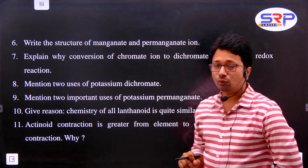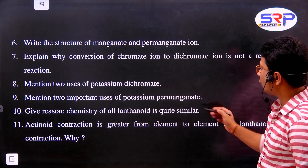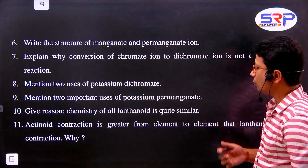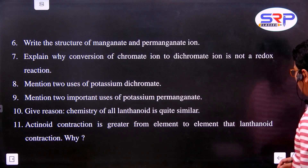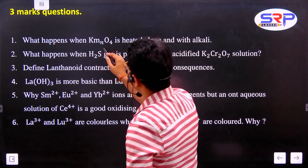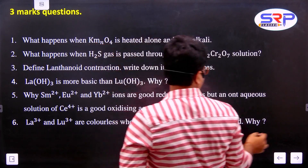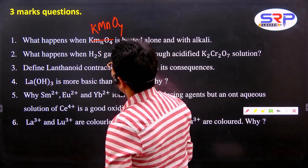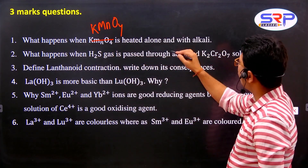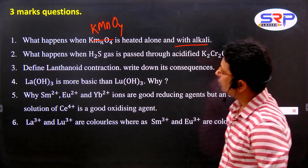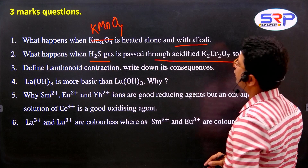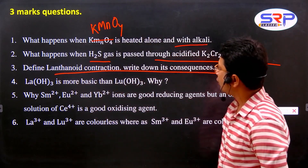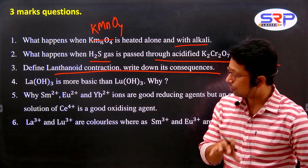Mention two uses of potassium dichromate and two important uses of potassium permanganate - these are 1-mark MCQ and 2-mark questions. Lanthanoid chemistry: all lanthanoids have quite similar chemical properties. Actinoid contraction is greater from element to element than lanthanoid contraction. What happens when KMnO4 is heated alone and with alkali? What happens when H2S is passed through acidified K2Cr2O7? These are important questions. Also: write down lanthanoid contraction and its consequences.